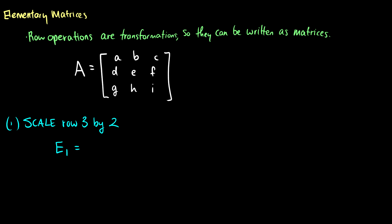Welcome back to Linear Algebra. Today we're going to talk about elementary matrices, invertibility, and finding inverses of 3 by 3 matrices and bigger. So what is an elementary matrix? Well, before we had row operations, and it turns out these row operations are transformations, so they can be written as matrices.